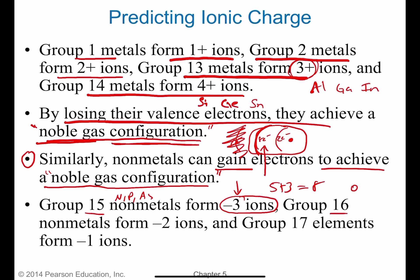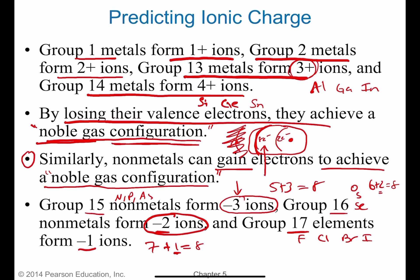Group 16 — oxygen, sulfur, and selenium — have six valence electrons based on their position in the periodic table. Six plus two is eight, so they gain two electrons and form two minus ions, giving them an overall charge of minus two. Group 17 halogens — fluorine, chlorine, bromine, and iodine — form minus one ions because they have seven valence electrons, and seven plus one is eight. So they each gain just one electron, giving them a charge of minus one.